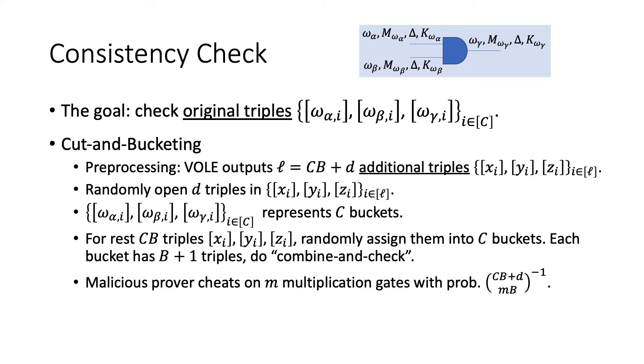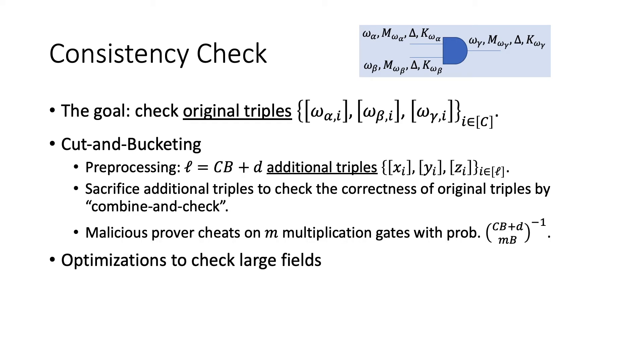Now the only thing left is to ensure that the prover does not cheat in the previous steps, because it can basically input any value to deviate from the computation of the circuit. The verifier has to make sure that all the multiplication gates are computed correctly. Assume that there are C multiplication gates in the circuit. Then the prover and verifier have the original triples. Then they will conduct a procedure called cut-and-bucketing, which is derived from cut-and-choose. In this procedure, they will generate L equals Cb plus D additional triples. And these additional triples will be sacrificed to check the correctness of original triples by a sub-procedure called combine-check. With carefully selected parameters, the soundness errors can be controlled. And also there are other optimizations to check the multiplication gates when the large field is used.